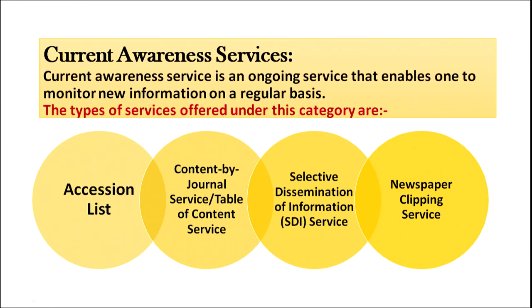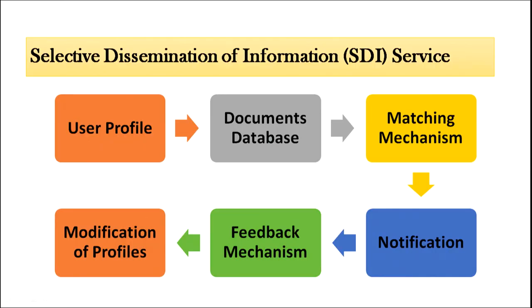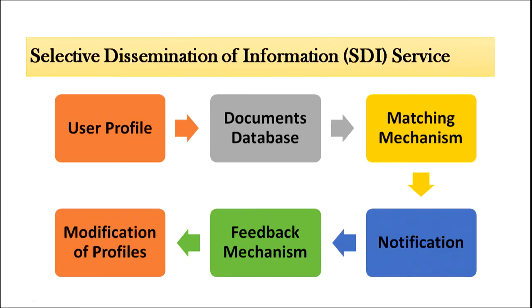Current awareness services is a very important library service. It is an ongoing service that enables users to monitor new information on a regular basis. Services offered under this category include accession lists, contents by journal service or table of contents service, SDI — selective dissemination of information — and newspaper clipping services. In selective dissemination of information, a user profile is created, document databases are maintained, and a matching mechanism is used to match documents to users. Notifications are sent to specific users, and a feedback mechanism allows modification of user profiles if their interests change.